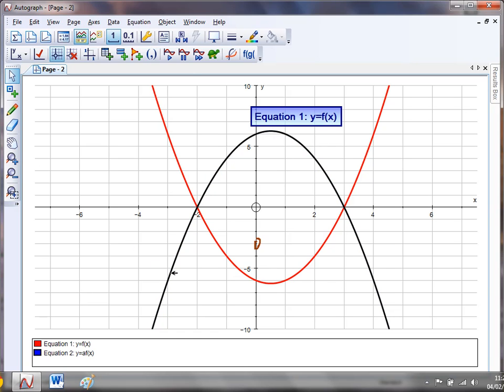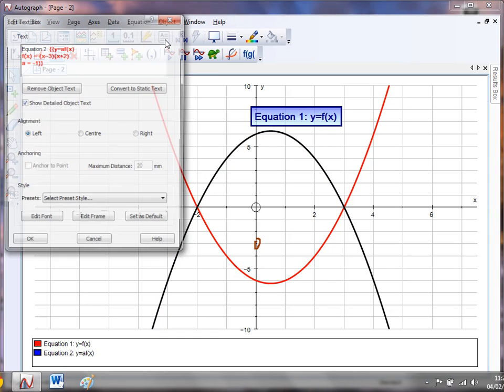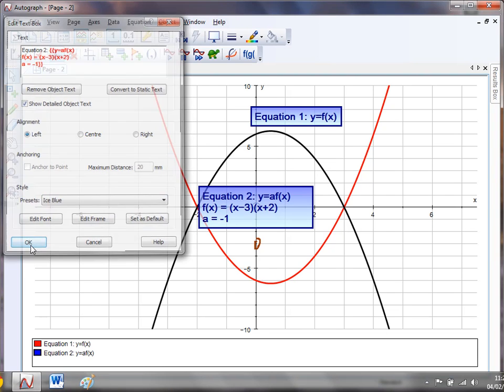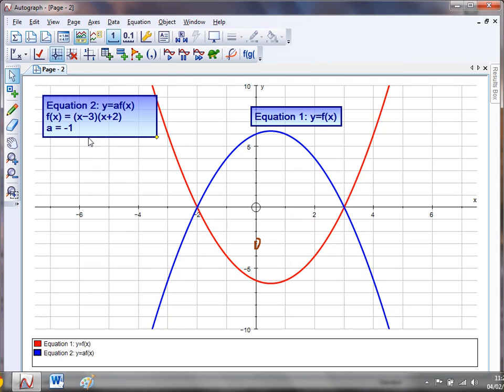Now if you want to actually label that a bit clearer, just give it a click and go for text box. Let's say I love a bit of ice blue, give that a click there. Then there's our equation there, y equals a f of x. We've also got the definition of the function there, and we can see that the current value of a is minus 1.